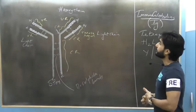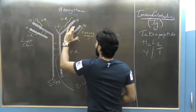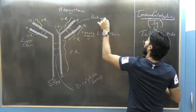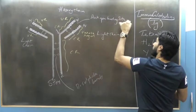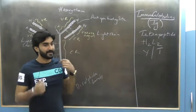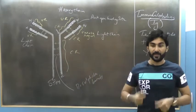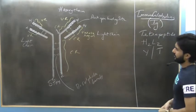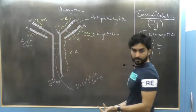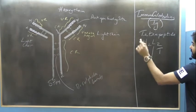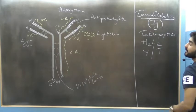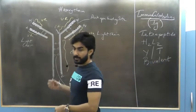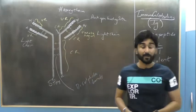The region that provides attachment to the antigen is called the antigen binding site, which includes the variable region of both the heavy chain and the light chain. One antibody molecule has two antigen binding sites. Therefore, every antibody molecule can bind to two antigens at a time, so we say every antibody molecule is bivalent.